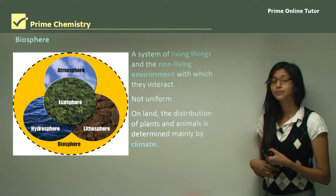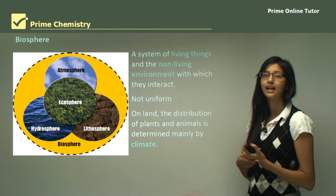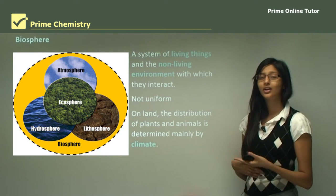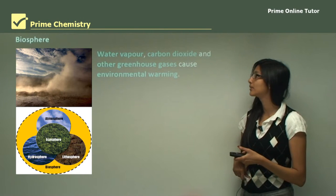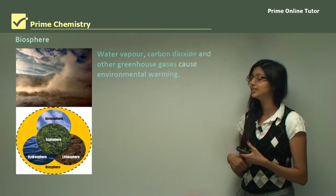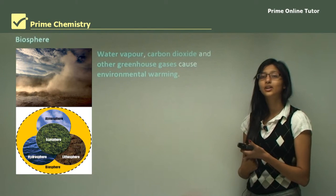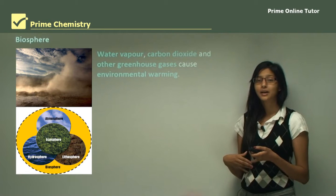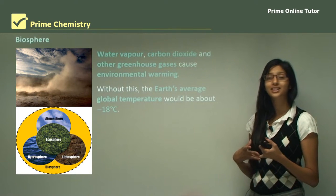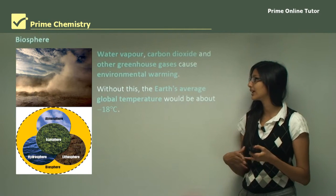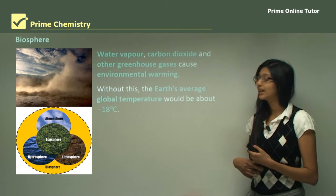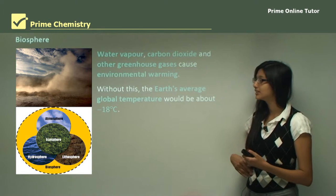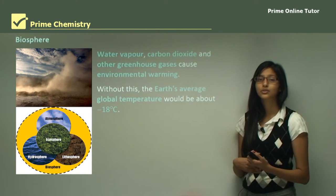On the land, the distribution of plants and animals is determined mainly by climate — only those kinds of plants and animals suited to the climate will live there. The biosphere also consists of water vapor, carbon dioxide, and greenhouse gases which cause global warming. We generally think of carbon dioxide as a bad gas, but it is not — because of these greenhouse gases our earth is warm enough to live in. Without these gases, earth's average temperature would be minus 18 degrees, which is too cold for living organisms to survive.